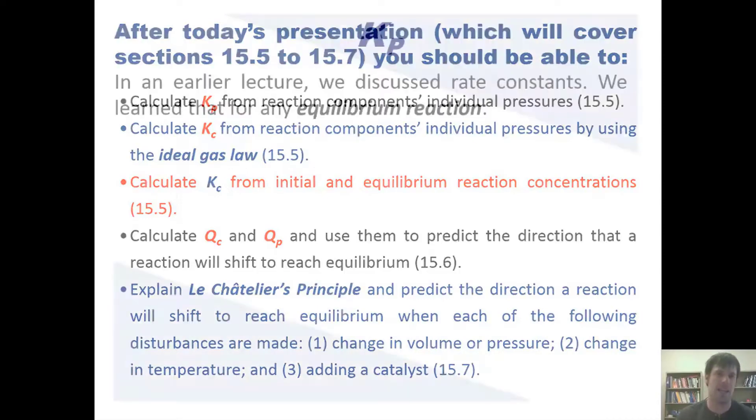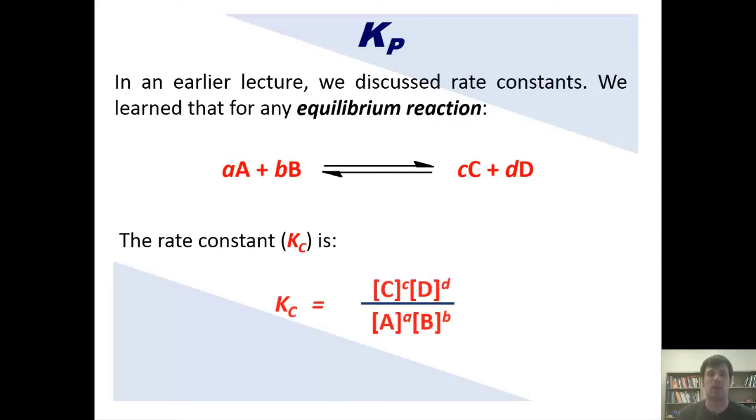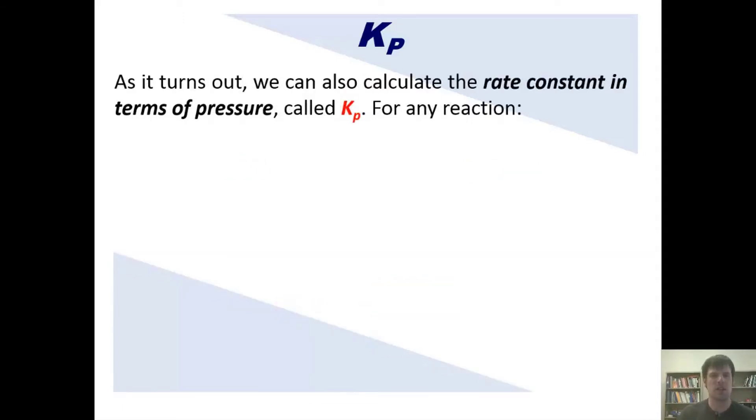Let's get started returning to Kp. In an earlier lecture, we discussed rate constants. We learned that for any equilibrium reaction, such as this one, the rate constant Kc is equal to this. As it turns out, we can also calculate rate constants in terms of pressure, called Kp, which we also mentioned in an earlier lecture.